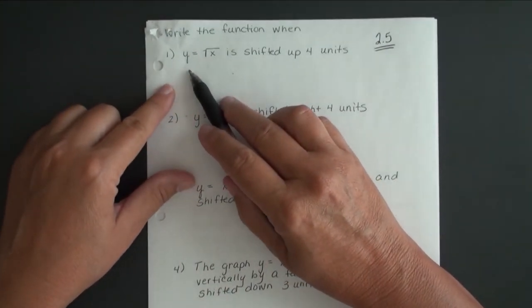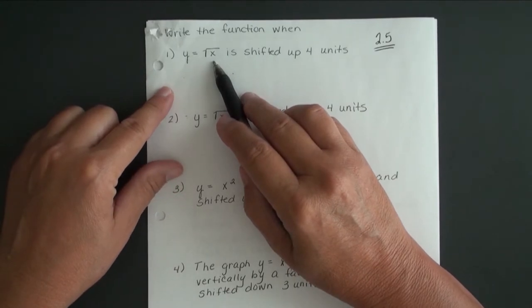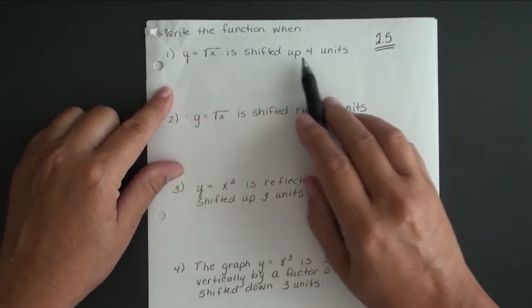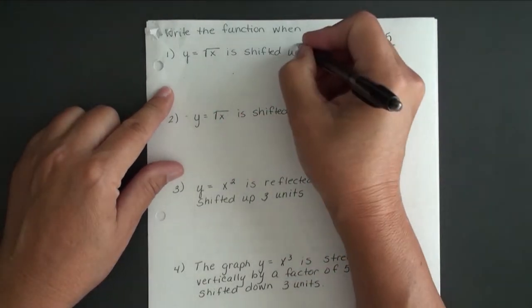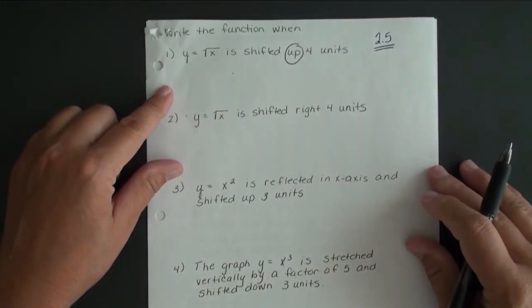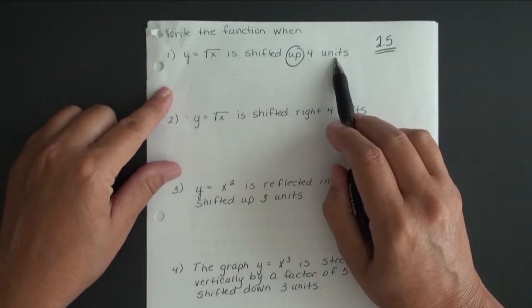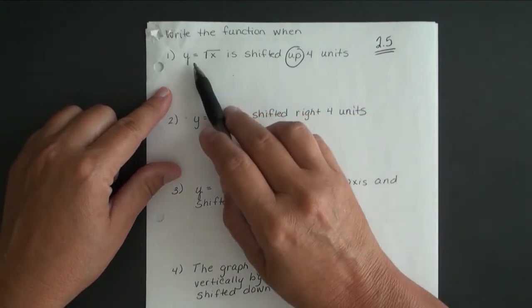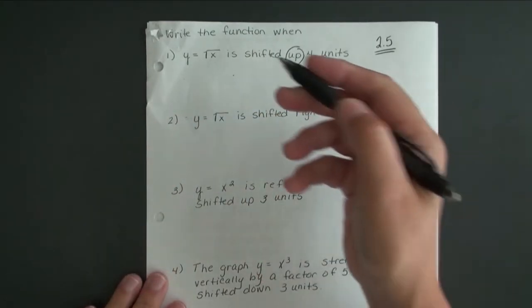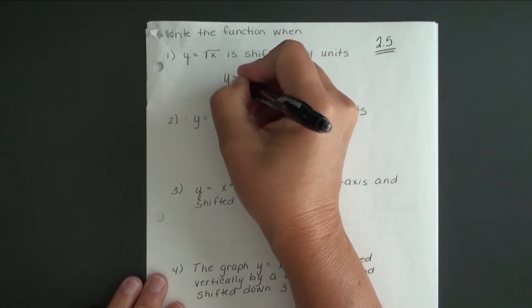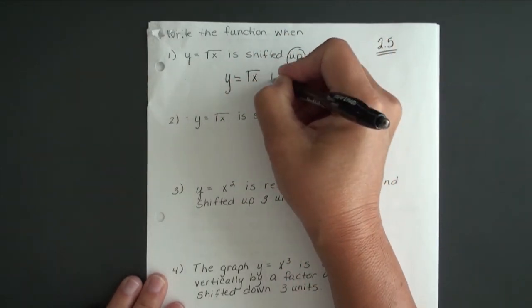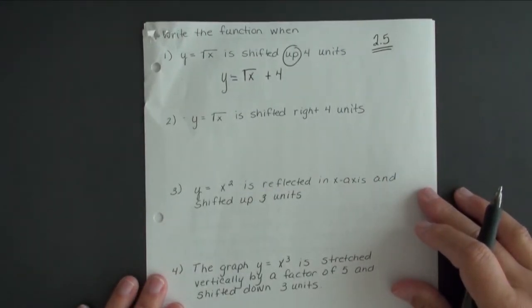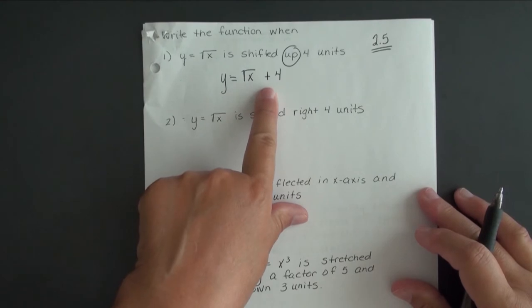This first problem says y equals square root of x, and we want to write the function when y equals square root of x is shifted up 4 units. Anytime we shift up or down, we're just going to add or subtract that number to our function. So our solution would be y equals square root of x plus 4. If we were shifting down 4 units, that would be minus 4.